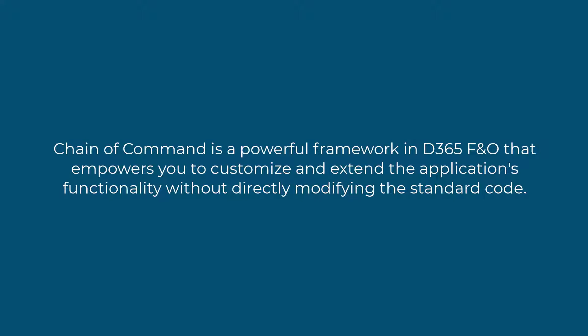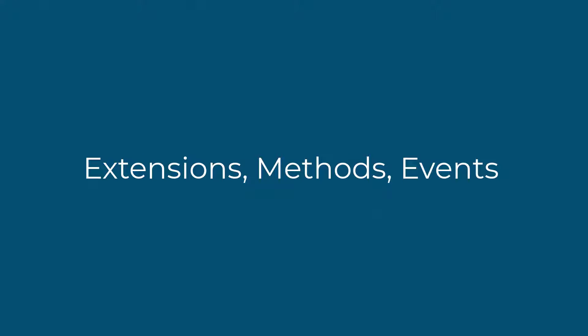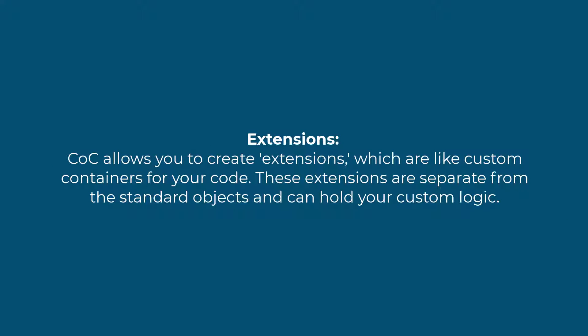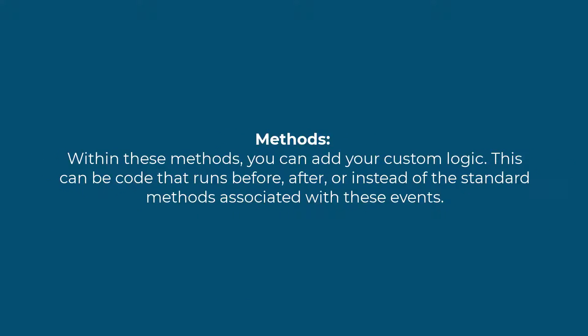To understand how Chain of Command works, let's break it down into three key components: extensions, methods, and events. First, extensions — Chain of Command allows you to create extensions, which are like custom containers for your code. These extensions are separate from the standard objects and can hold your custom logic.